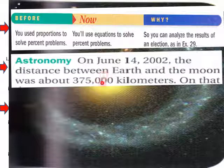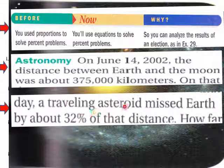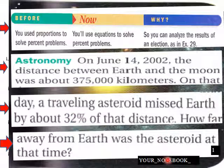June 14, 2002. The distance between Earth and the Moon is about 375,000 kilometers. On that day, a traveling asteroid missed Earth by about 32% of that distance. How far away from Earth was the asteroid? That is in part two, I think, of this lesson. That's what you're headed into.